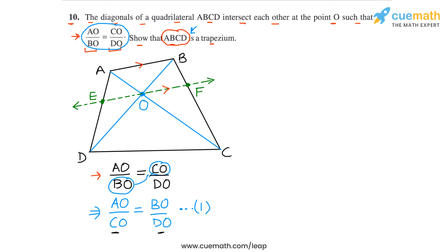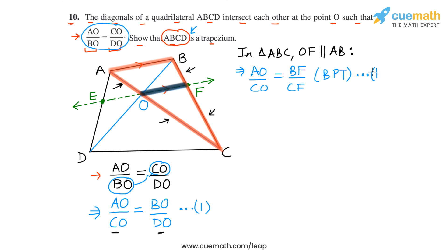Let's first consider triangle ABC. In triangle ABC, OF is parallel to AB because this is the way we have drawn this line EF, and therefore we can say that AO by CO is equal to BF by CF, and this is using the basic proportionality theorem. Let's call this equation 2.